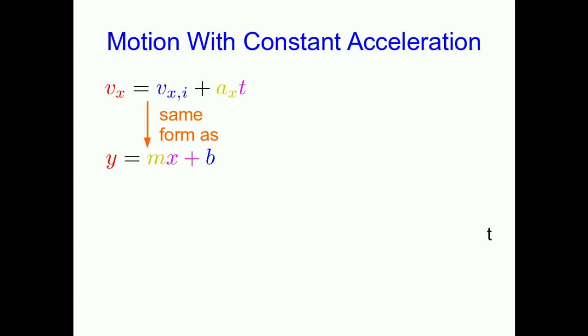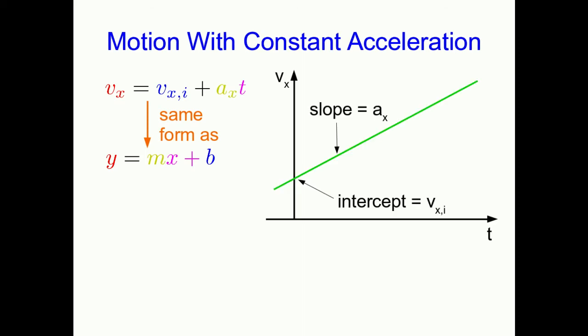And again, so what? Well again, we've got ourselves an equation that's in the same form as the regular equation for a straight line. So this is telling us something we already knew, which is that the vx versus t graph for constant acceleration must be a straight line.